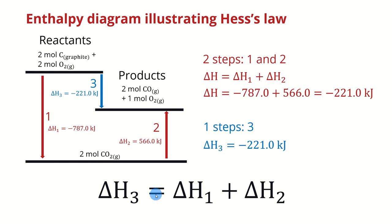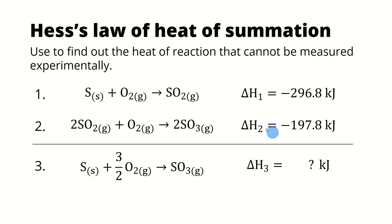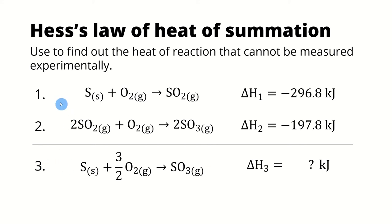So delta H3 is equal to delta H1 plus delta H2. The Hess's Law concept can be used to find out the heat of reaction that cannot be measured experimentally. In this slide, reaction number three — sulfur reacting with oxygen to produce sulfur trioxide — is a reaction whose heat cannot be measured very easily. However, we can get the enthalpy change of this reaction by looking at reactions one and two, and the answer is yes, we can combine them.